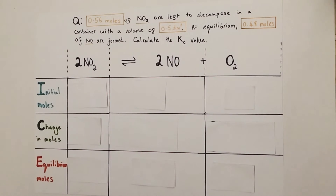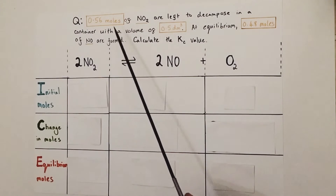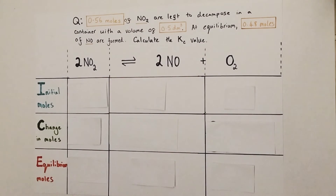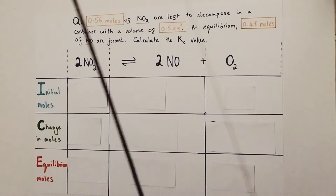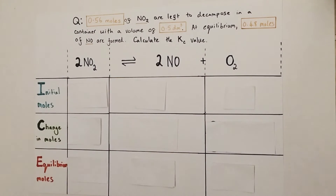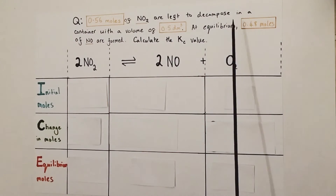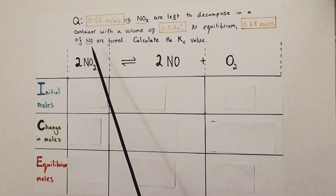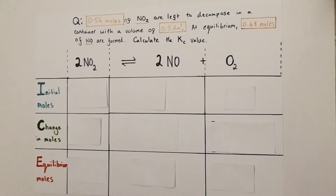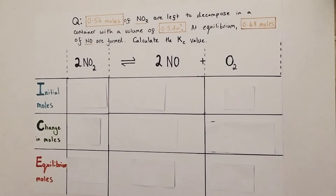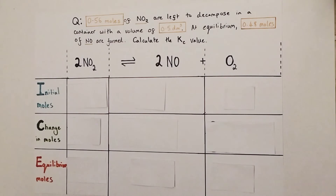This second example has a little more complexity, but let's solve it together. We're starting with 0.56 moles of nitrogen dioxide, left to decompose in a container with a volume of 0.5 litres, allowed to reach equilibrium. At equilibrium, the mixture contains 0.48 moles of nitrogen monoxide, and we're asked to calculate the Kc value. You will be provided with the reversible symbol equation for the reaction taking place, and we can utilise that ICE method again.